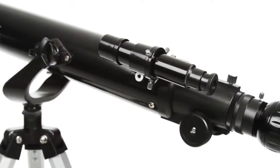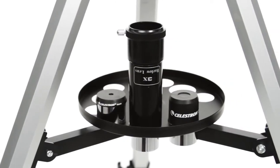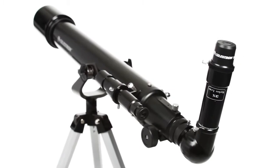This includes a tripod, a finder scope, two eyepieces, and a Barlow lens, which triples the power of each eyepiece.